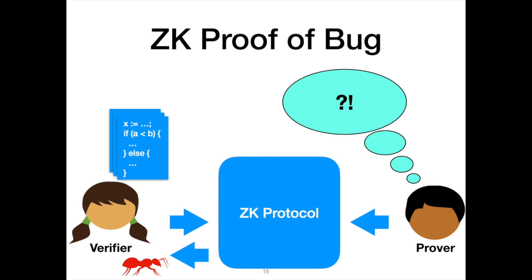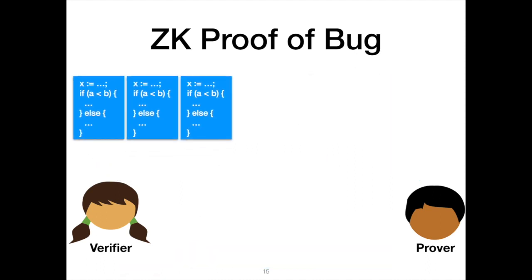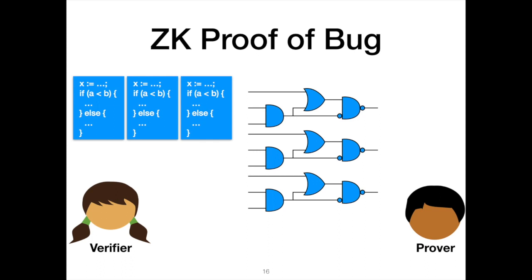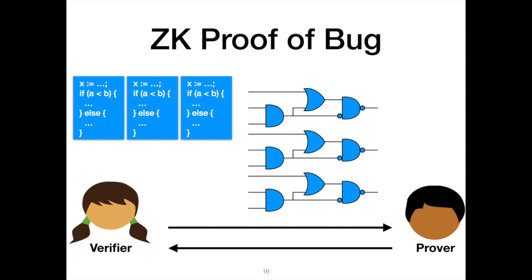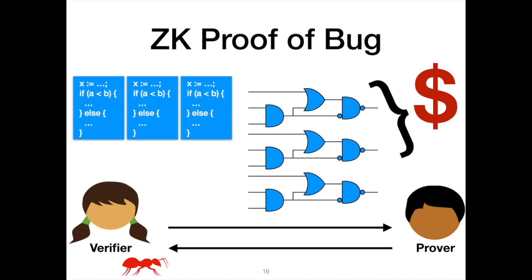Returning to our problem: Alice the verifier has this collection of code and Bob knows a bug in it. One way to represent this is to let Alice break her codebase up into a number of snippets, each separately representable as a different circuit. Alice and Bob then perform a proof that says one of these circuits — undisclosed which one — exercises a bug. The problem is that as Alice's codebase grows and the number of code paths through her program grows, the cost of the JKO paradigm grows as well, because the material Alice must send to Bob is proportional to the size of the overall circuit.